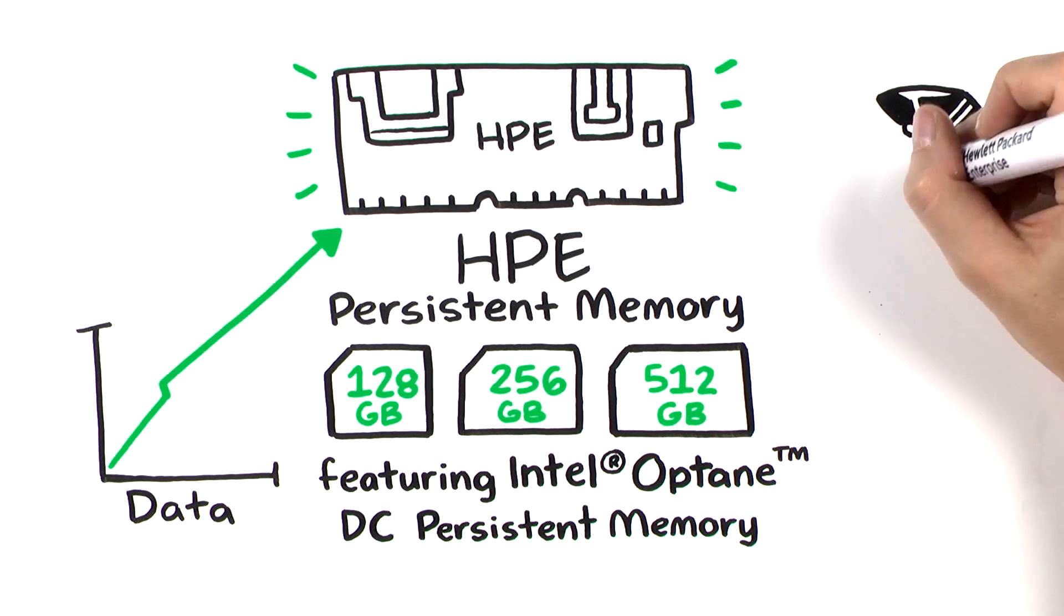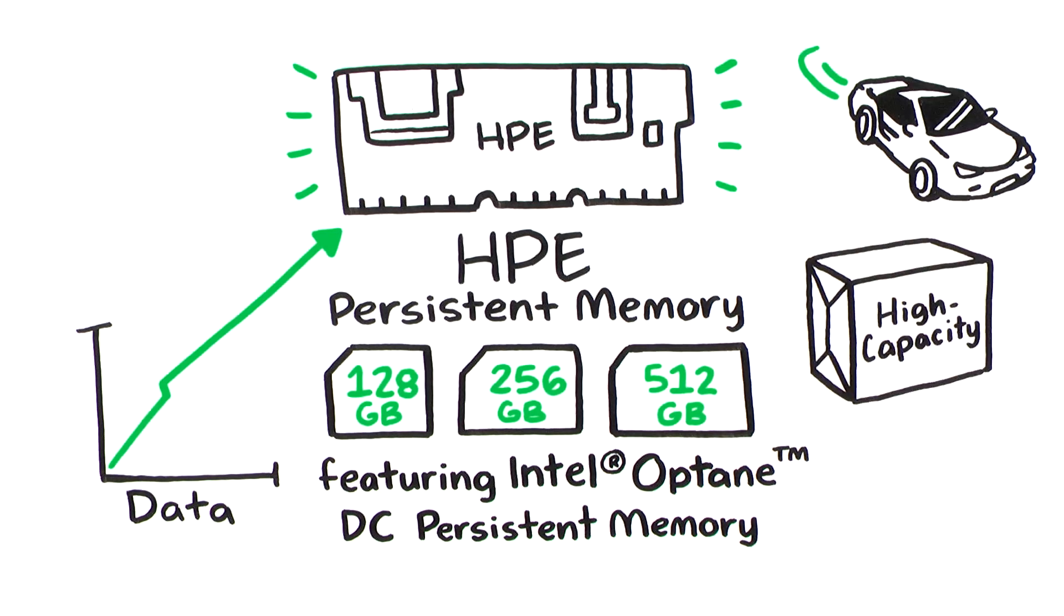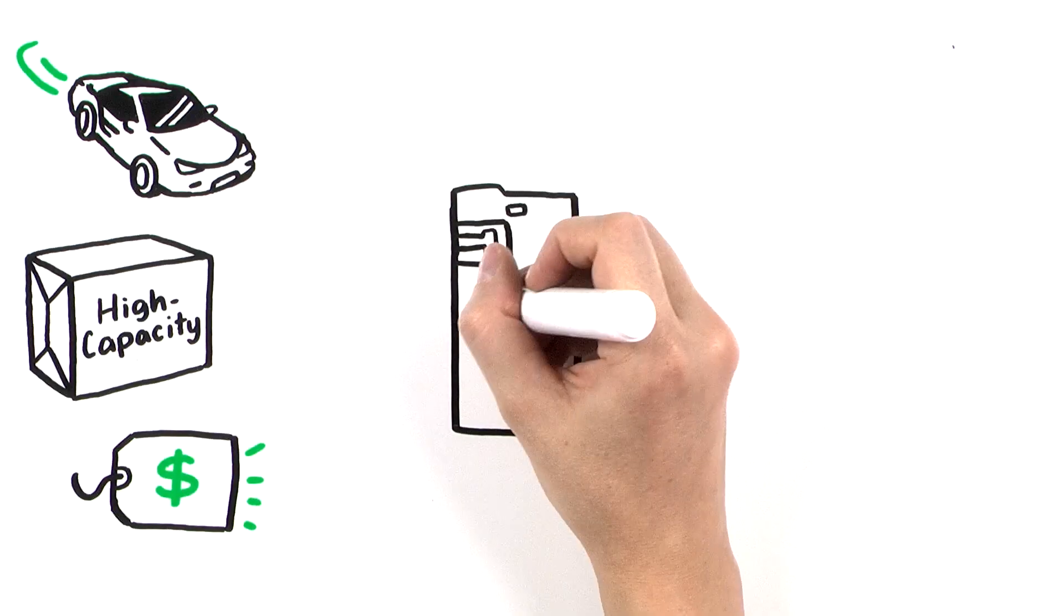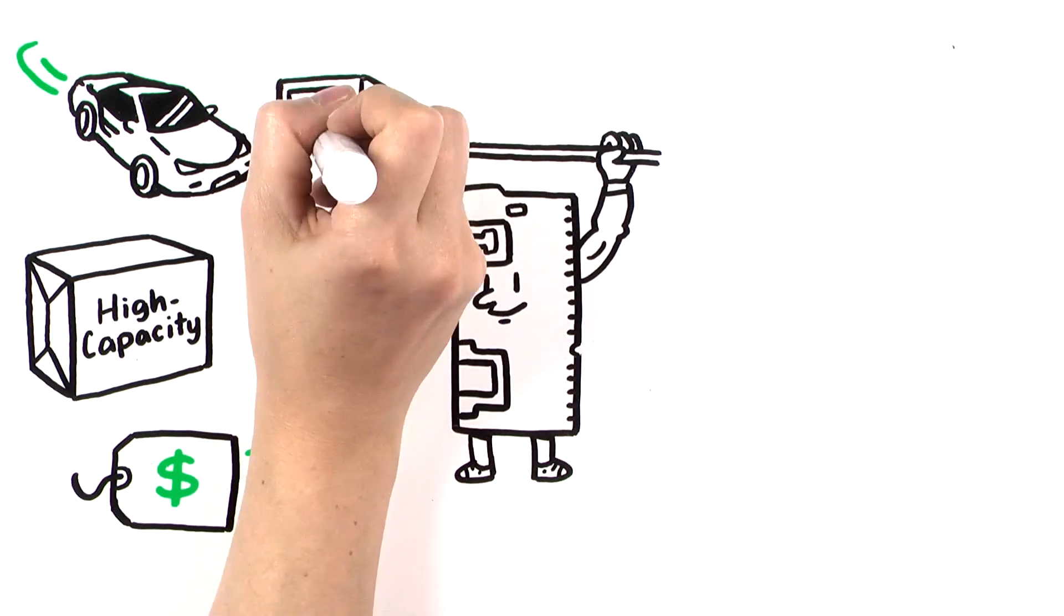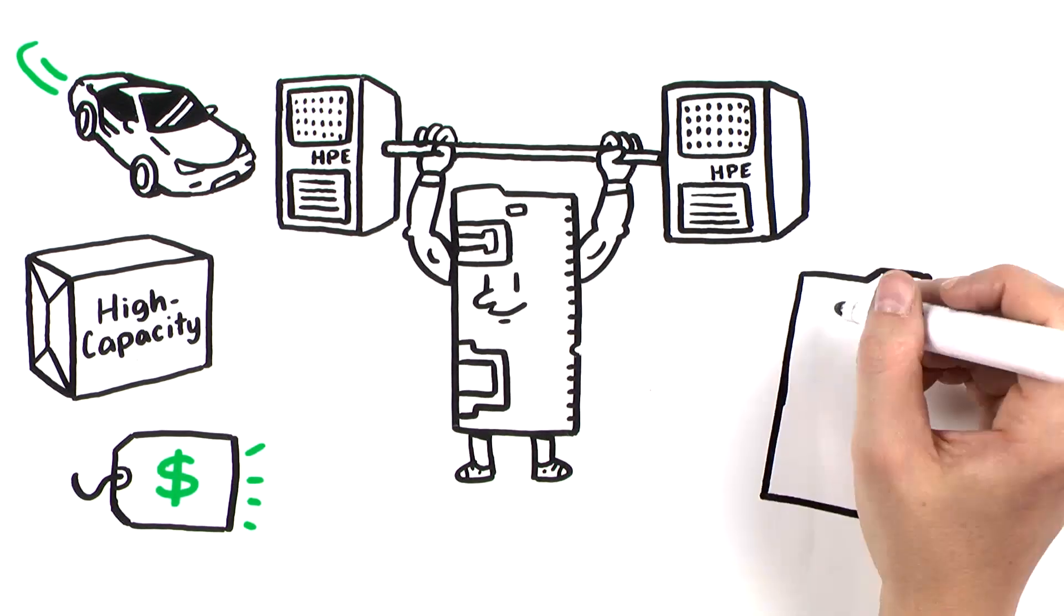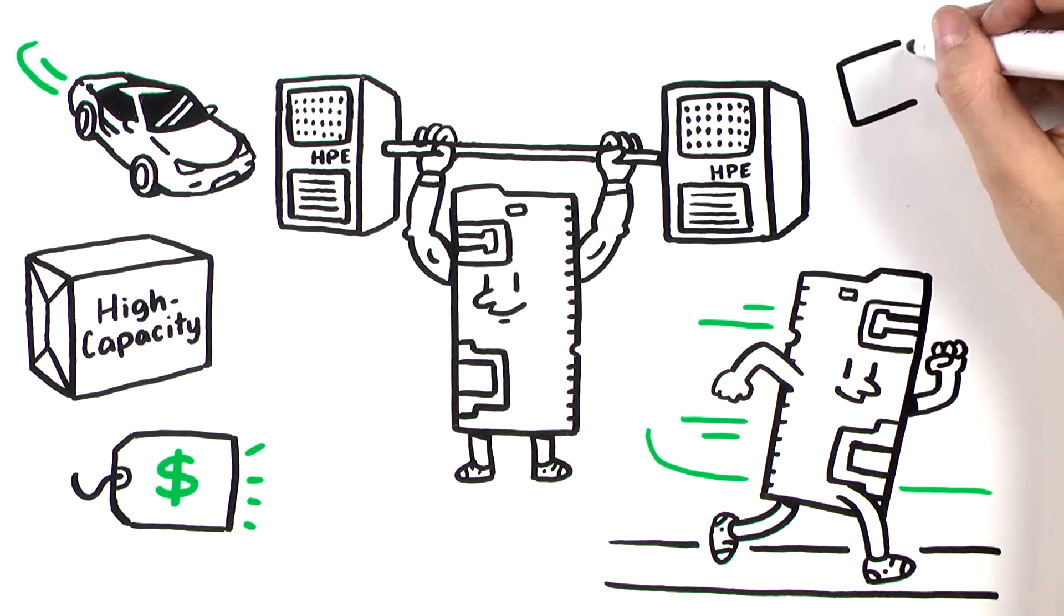It works with DRAM to provide fast, high-capacity, cost-effective memory and storage to transform big data workloads and analytics possibilities by enabling data to be stored, moved, and processed at unprecedented speed, improving TCO.